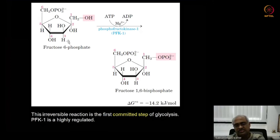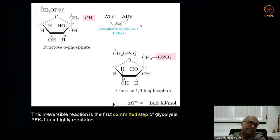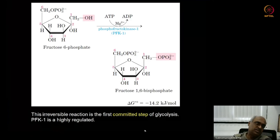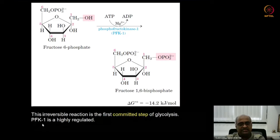The committed step is not synonymous with the rate-limiting step. The rate-limiting step is the individual reaction whose rate is slowest compared to others in the series, thereby determining the overall pathway speed. Sometimes the committed step may also be the rate-limiting step, but these are independent concepts. Due to this commitment, phosphofructokinase is subject to serious regulation, which we will learn about after glycolysis.